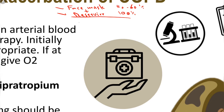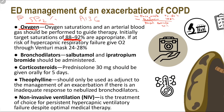The nasal cannula may be more suitable for COPD because it provides about 30% oxygen concentration. For bronchodilators: salbutamol at a dose of 5 milligrams and ipratropium bromide at a dose of 0.5 milligrams are given via nebulizer. For corticosteroids: prednisolone 30 milligrams orally, and if not available, hydrocortisone 100 milligrams IV.